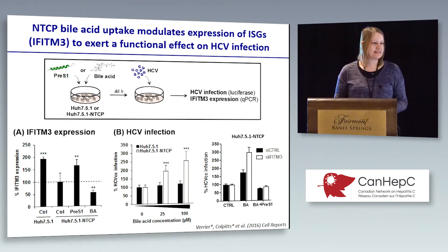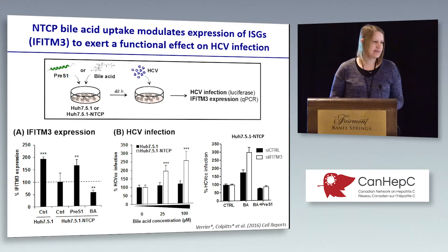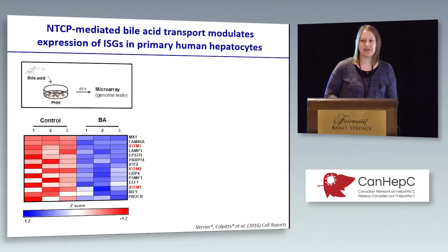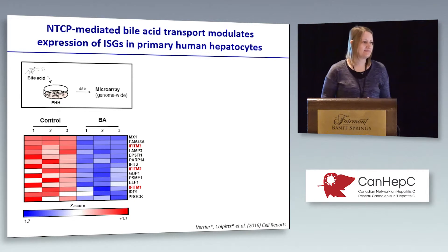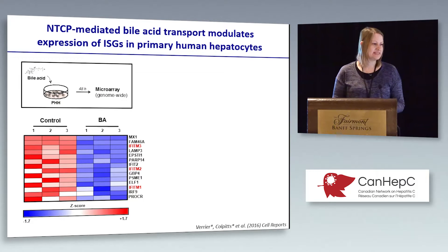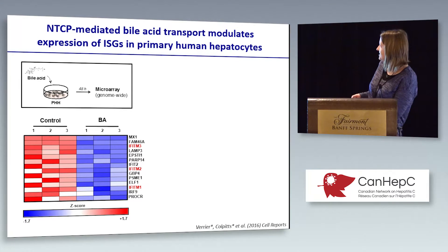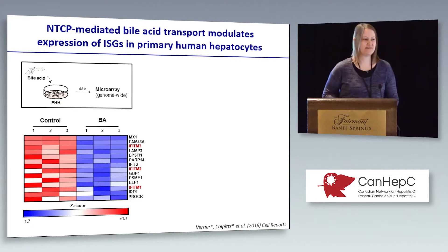These studies were in Huh7-derived cells, which aren't the best for looking at innate immunity, so we went on to validate our findings using primary human hepatocytes. We first looked at whether bile acid suppresses ISG expression in primary human hepatocytes using microarray analysis, and the answer is yes. In three different samples, treatment of PHH with bile acid suppresses the expression of ISGs, including IFITM3 and the other IFITMs as well.